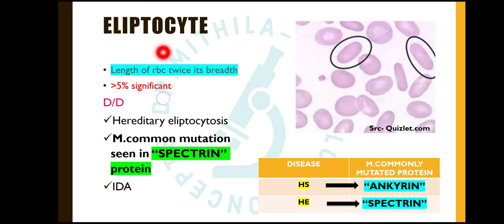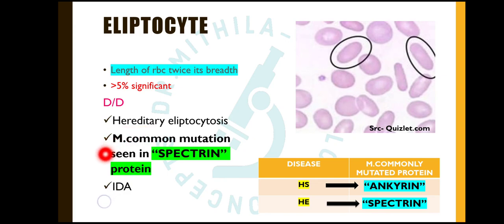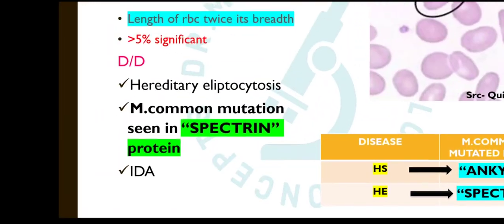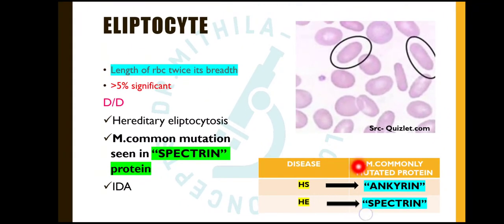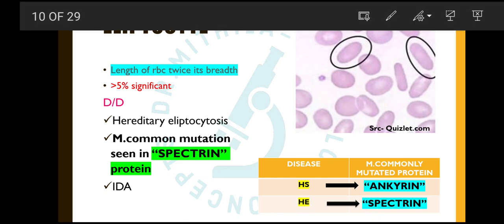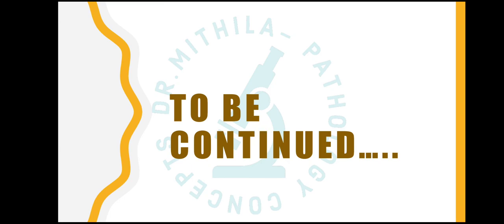Lastly, elliptocytes: the length of the RBC is more than twice its breadth. If more than five percent of elliptocytes are seen in the peripheral smear, it is significant. The cause is hereditary elliptocytosis, and it can also be seen in severe iron deficiency anemia. The important mutation in hereditary elliptocytosis is the spectrin protein mutation — this is MCQ-important. To summarize: in hereditary spherocytosis the ankyrin mutation is seen, while in hereditary elliptocytosis the spectrin mutation is most commonly implicated. This topic will be continued in the next lecture.